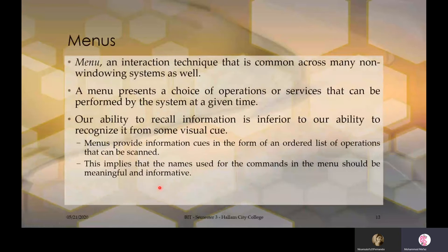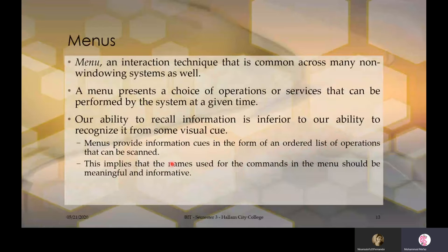Next: Menus. A menu presents a choice of operations or services that can be performed by the system at a given time. Our ability to recall information is inferior to our ability to recognize it from a visual cue. Menus provide information cues in the form of an ordered list of operations that can be scanned. The names used for commands in the menu should be meaningful, informative, and familiar. When listing items in a menu, they should appear in an ordered list.